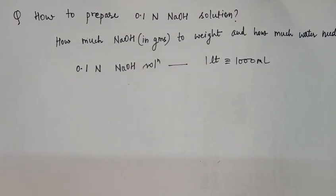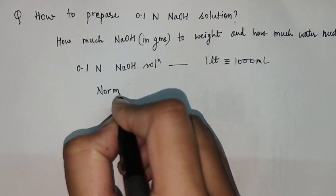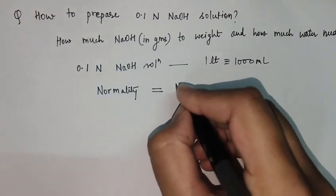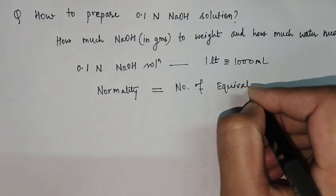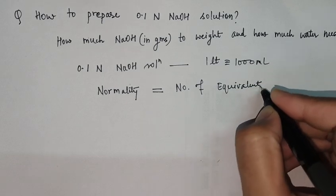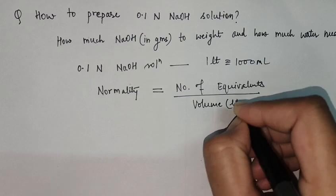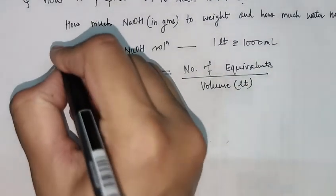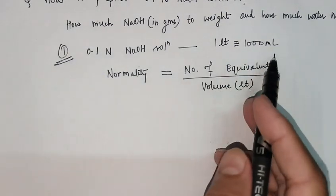Normality equals number of equivalents upon volume in liters. In this case, we are preparing 1 liter of the solution.